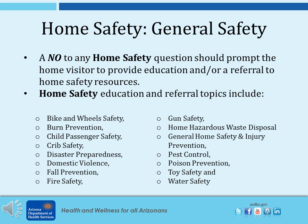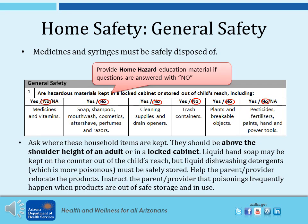A no to any home safety question should prompt you to provide education and a referral to home safety resources. The first question under home safety is about hazardous materials. Provide home hazard education material if any of these questions are answered with a no. Ask where household items are kept — they should be above the shoulder height of an adult or in a locked cabinet. Liquid hand soap may be kept on the counter, but liquid dishwashing detergents must be safely stored. Help the parent relocate products and instruct them that poisonings frequently happen when products are out of safe storage and in use.